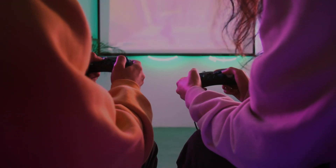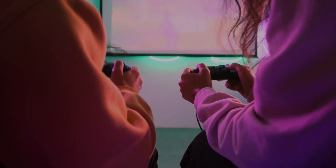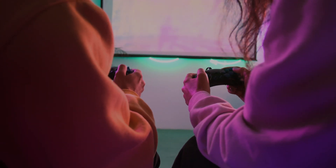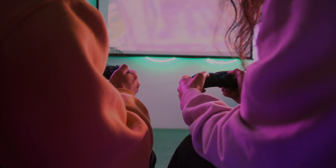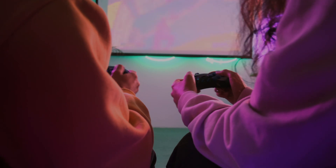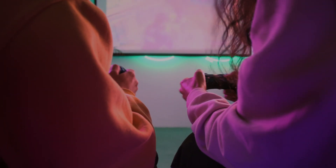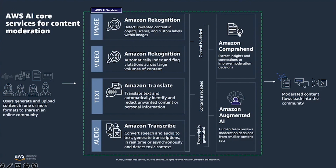Let's get personal for a second. Have you ever witnessed or experienced toxic interactions when playing games? And if so, how did that interaction change your perception of that game? AWS content moderation AI services can be leveraged to streamline and automate your moderation workflows with fully managed AI services that include Amazon Rekognition, Transcribe, Comprehend, Translate, and Augmented AI to proactively detect inappropriate, unwanted, or offensive content at scale and protect sensitive information.